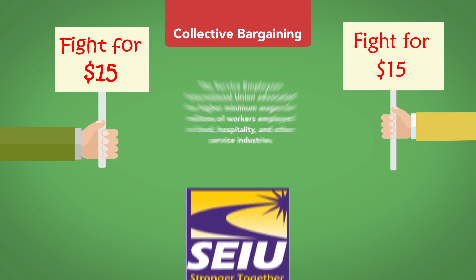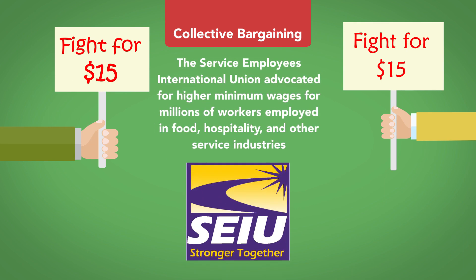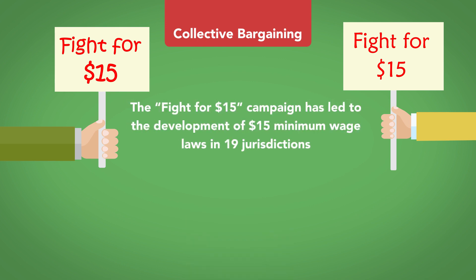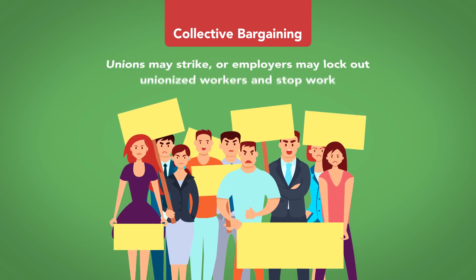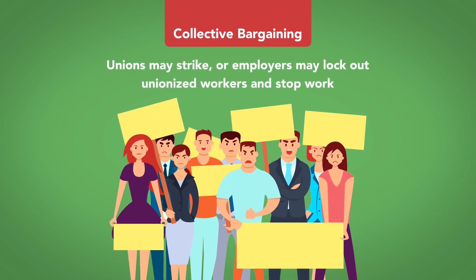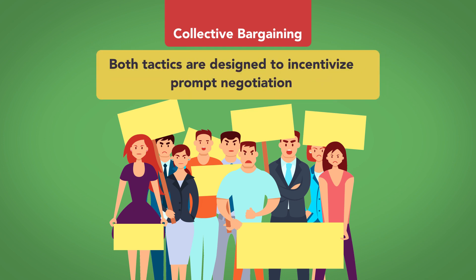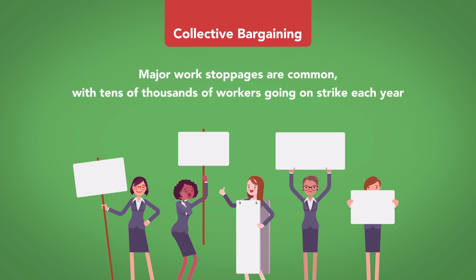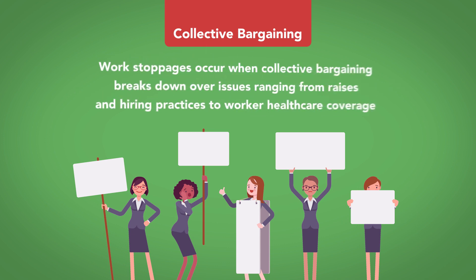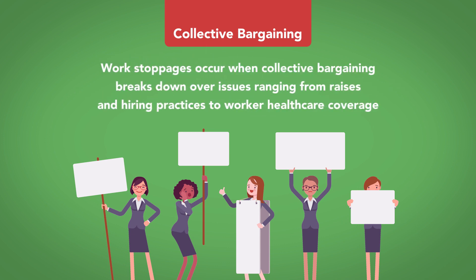Through the Fight for $15 campaign, the Service Employees International Union advocated for higher minimum wages for millions of workers employed in food, hospitality, and other service industries. Over the past five years, the Fight for $15 campaign has led to the development of $15 minimum wage laws in 19 jurisdictions, including California and New York. When collective bargaining fails, unions may strike, or employers may lock out unionized workers and stop work. Both tactics are designed to incentivize prompt negotiation. Despite a decline, major work stoppages are common, with tens of thousands of workers going on strike each year. Work stoppages occur when collective bargaining breaks down over issues ranging from raises and hiring practices to worker health care coverage.